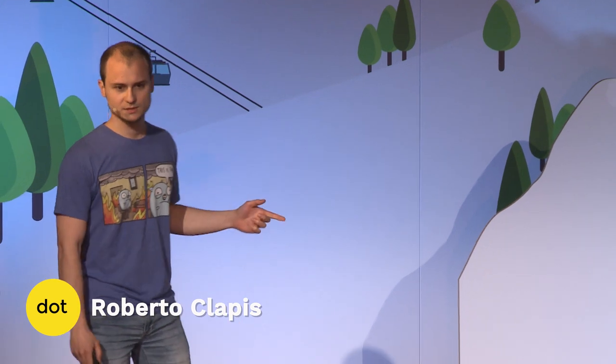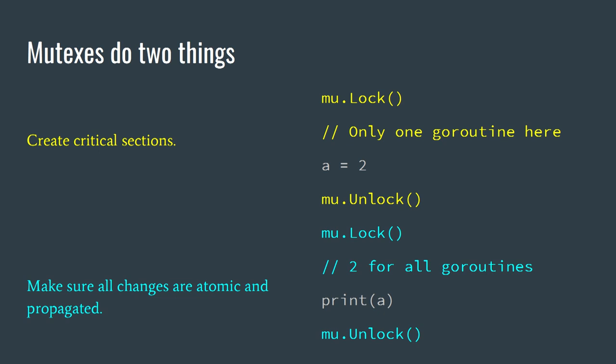If you wonder how the mutex works and what it ensures you — you probably know the first thing mutexes do, but not the second one. The first one is that they ensure critical sections, so you know that inside the yellow lines, you're the only one executing. The one thing that is usually overlooked is that they also guarantee that everything that happens inside the critical section is propagated. So if you change a variable in there, in your cache, and then you unlock, all the other caches are going to be able to read it with no problems.